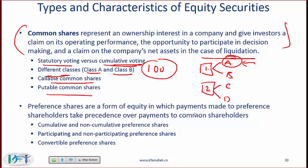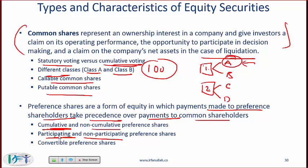Preference shares are a form of equity in which payments to preference shareholders take precedence over payments to common shareholders. You can have cumulative and non-cumulative preference shares — in cumulative preference shares you collect dividends from the past if they were not paid, making them preferable over non-cumulative. Participating preference shares allow shareholders to receive some additional percentage of profit. Convertible preference shares are convertible to common stock.